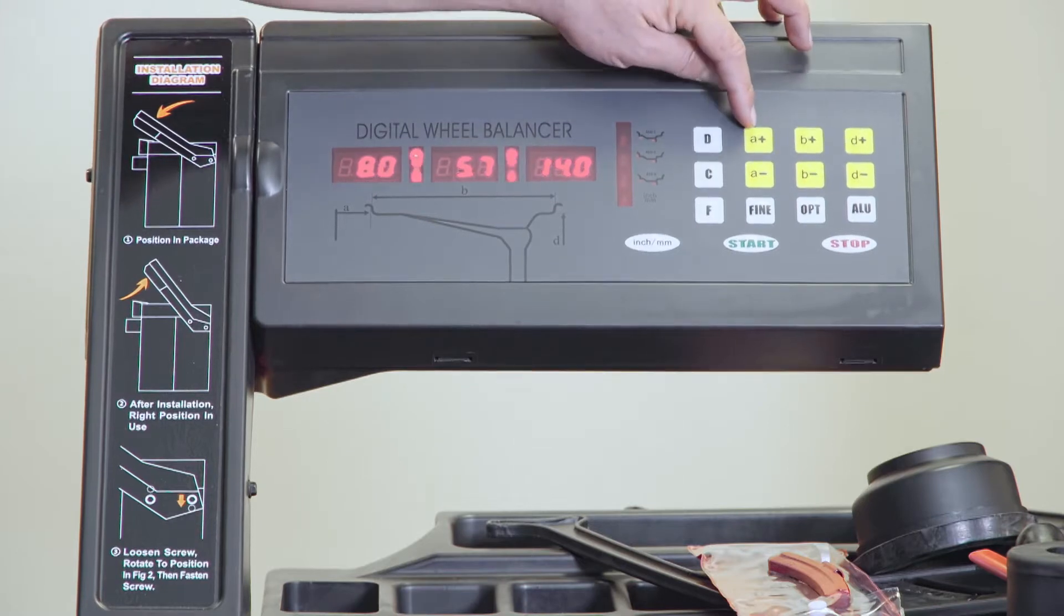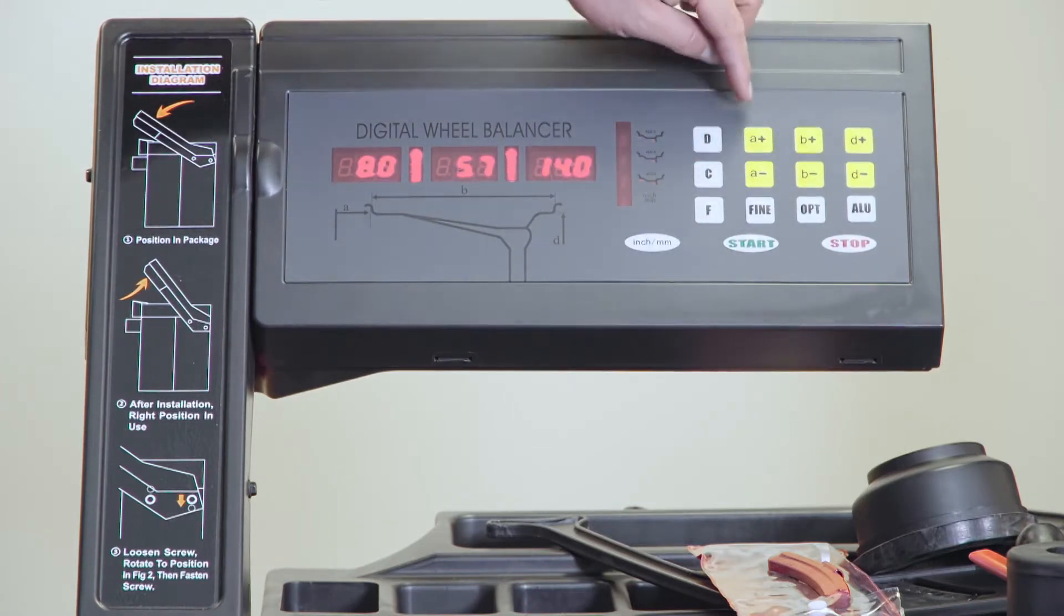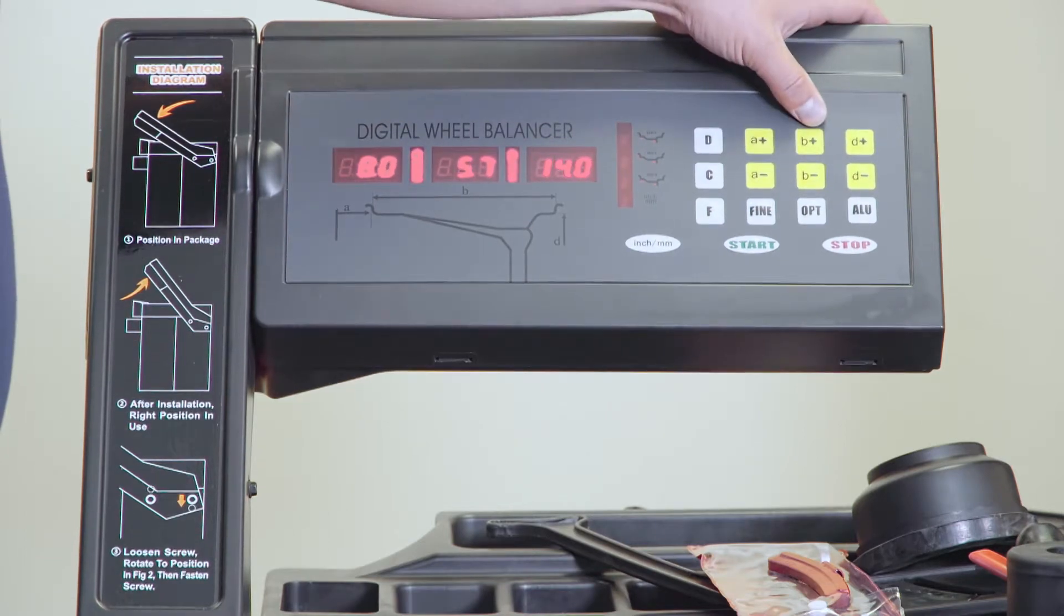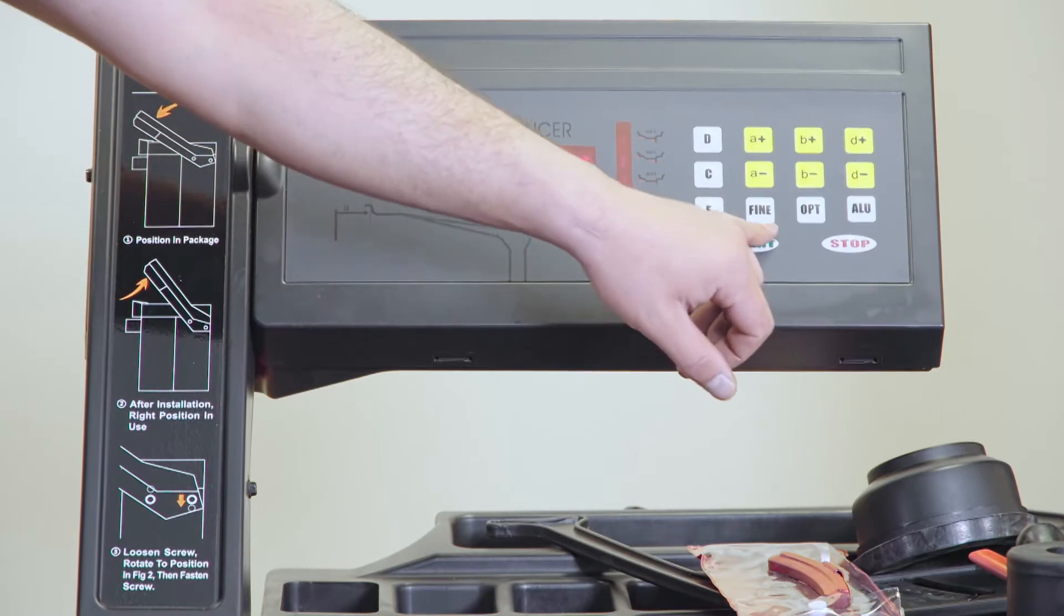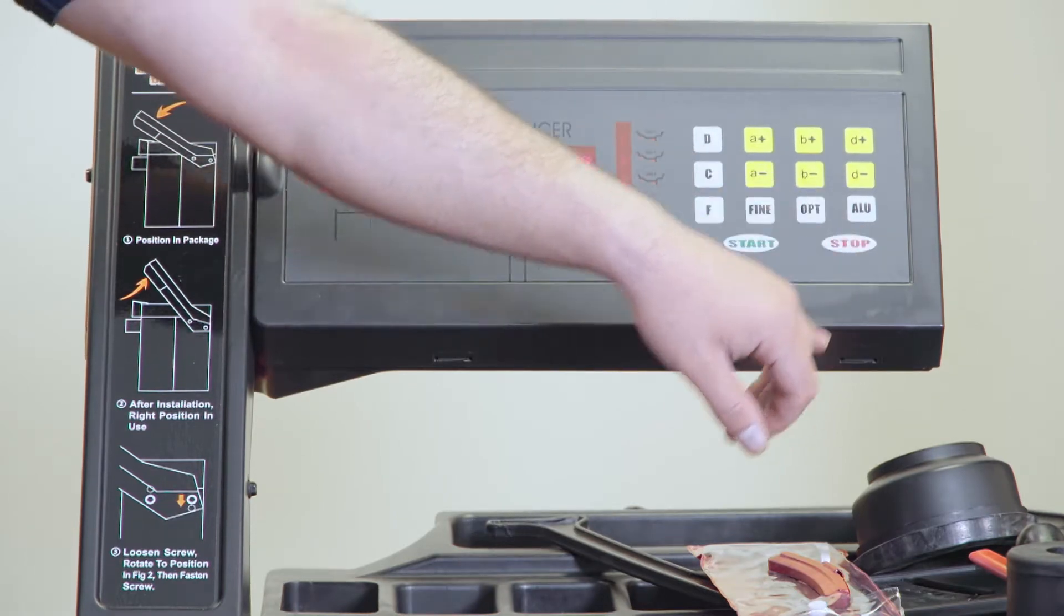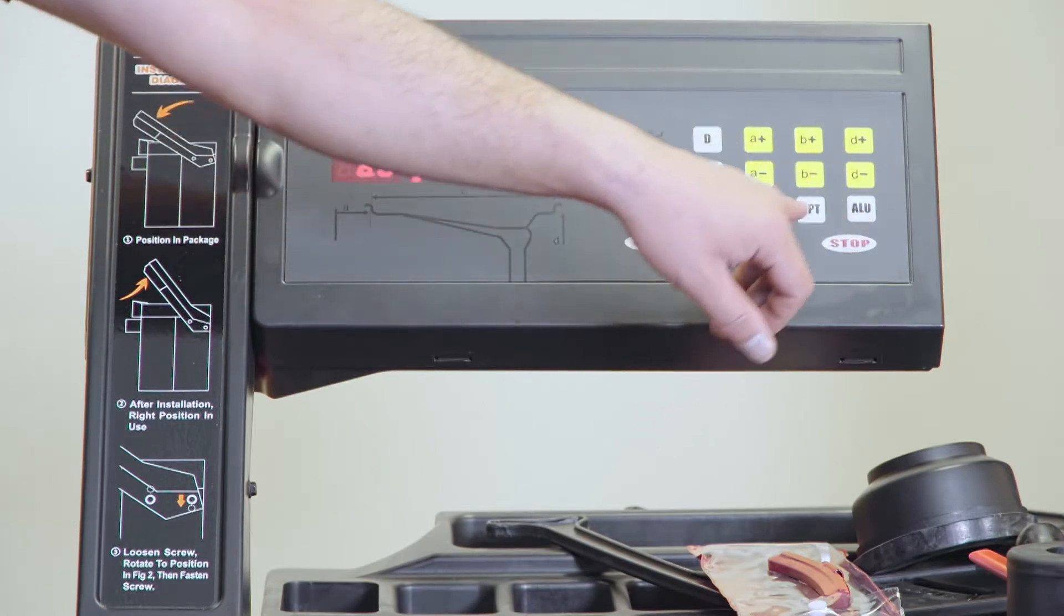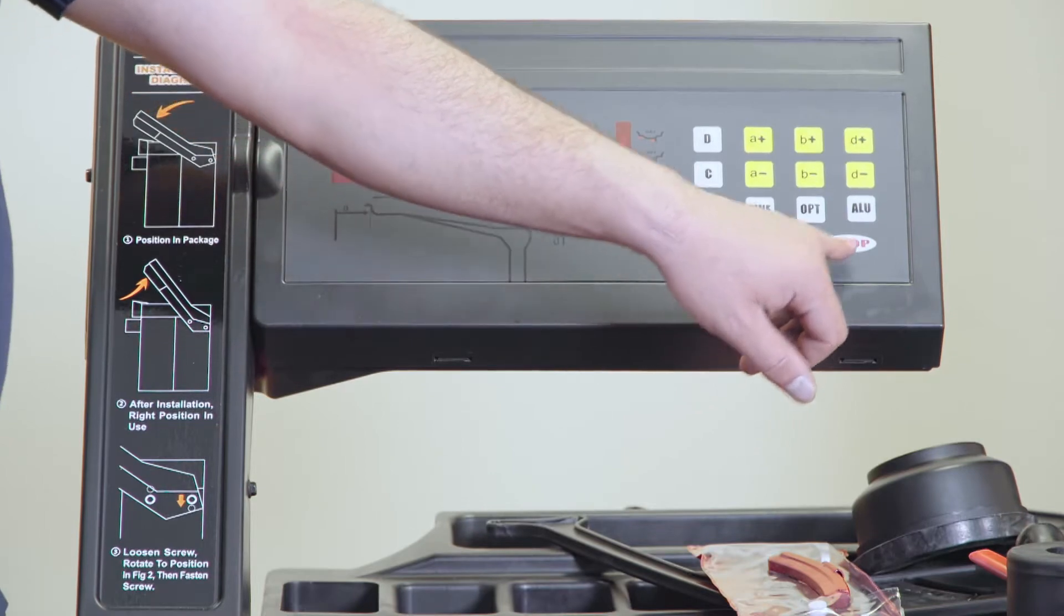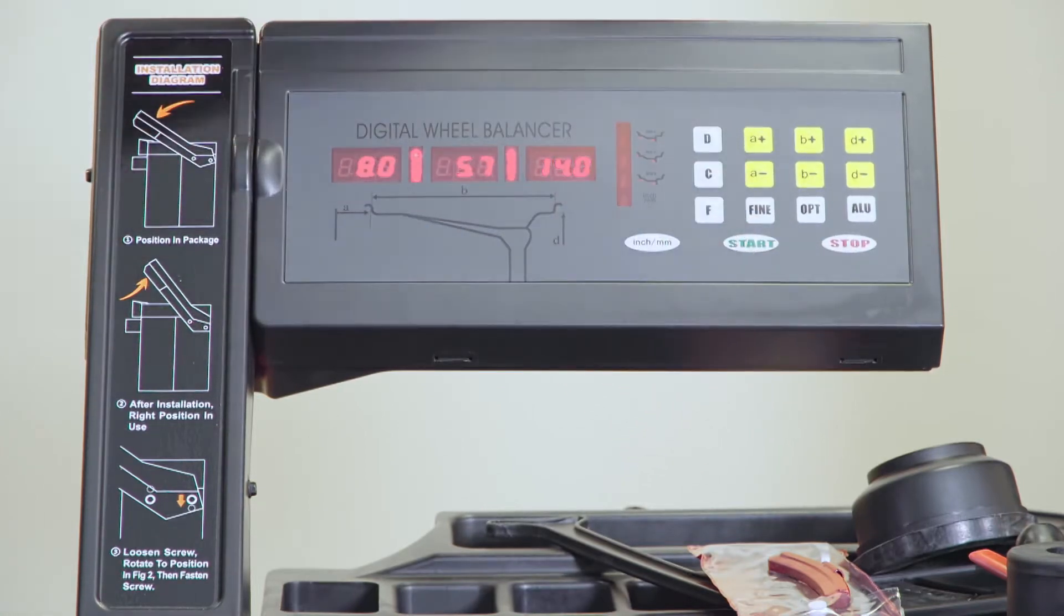This is the distance adjuster. If you need to manually adjust the distance of the rim from the flange, the width of the tire and the diameter. The fine button is used for calibration as well, optimize and aluminum. This is to select the different settings for the aluminum. Start button, stop button. You only use the start button if the hood switches off.